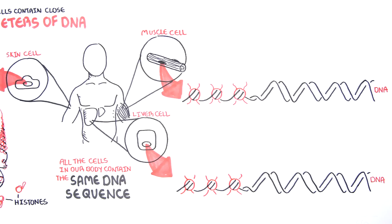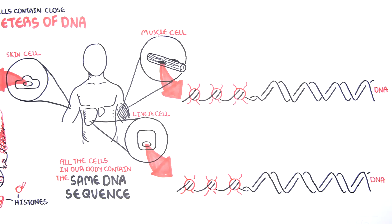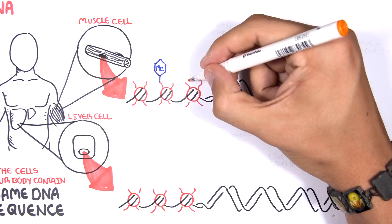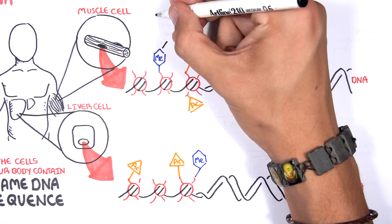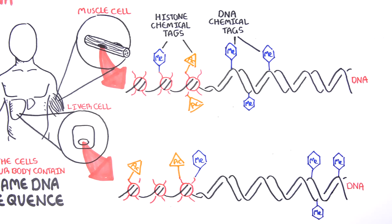The reason is that different cells only use or express certain genes. Within each cell, the DNA and also the histones can be tagged by tiny chemicals that modify gene expression. These chemical tags cause some genes to be turned on and some genes turned off.